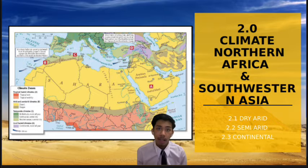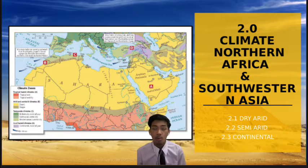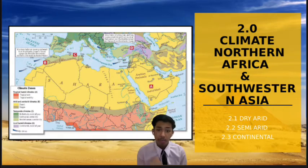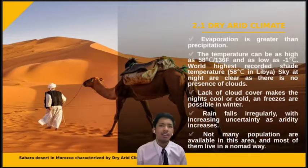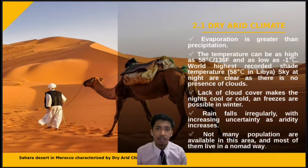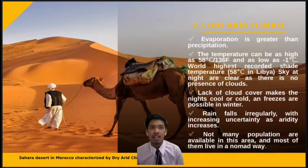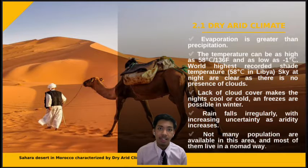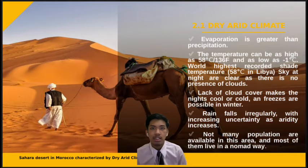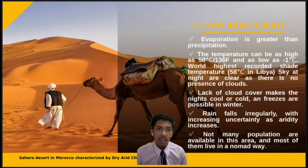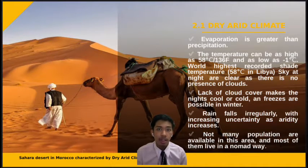Now we're moving on to the climate of this region. There are three types of climate: dry arid, semi-arid, and continental arid. In dry arid, the temperature can be as high as 58°C and as low as 1°C. There is also a lack of cloud cover which makes nights cold, and it rains irregularly in the dry arid climate. Because of this, not many people live in this area, and if there is population, most of them live a nomadic way of life.